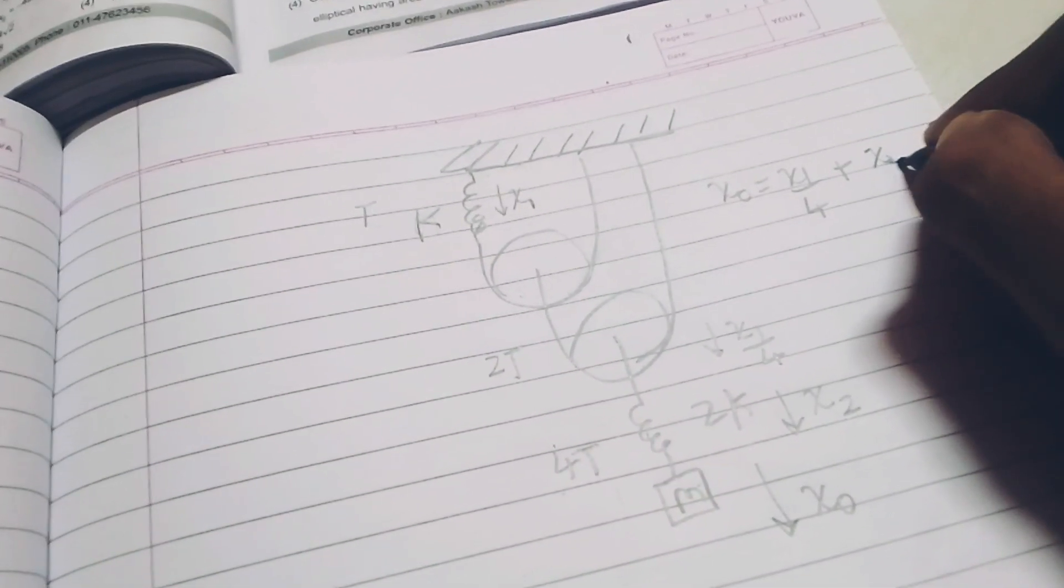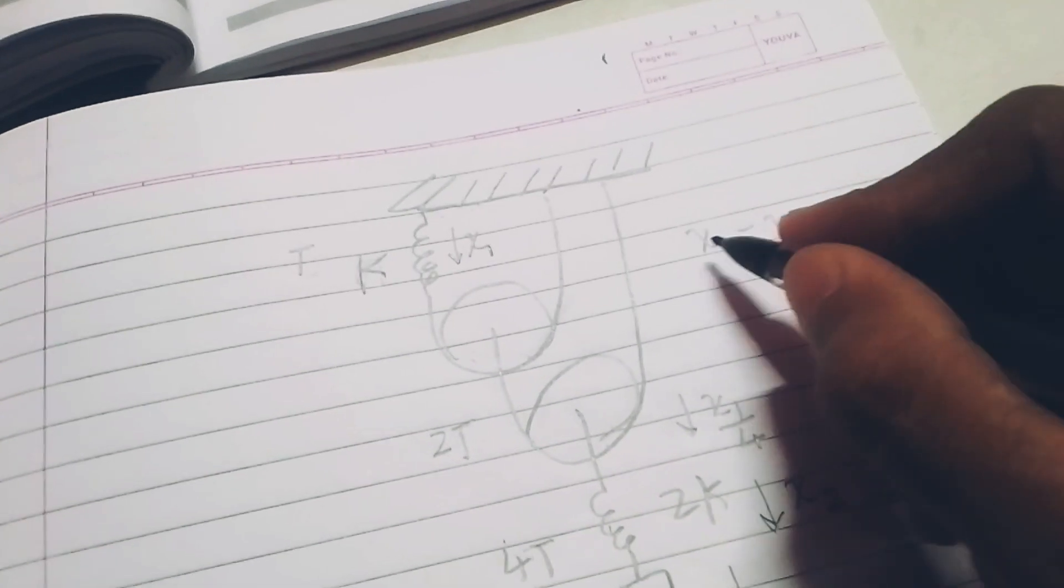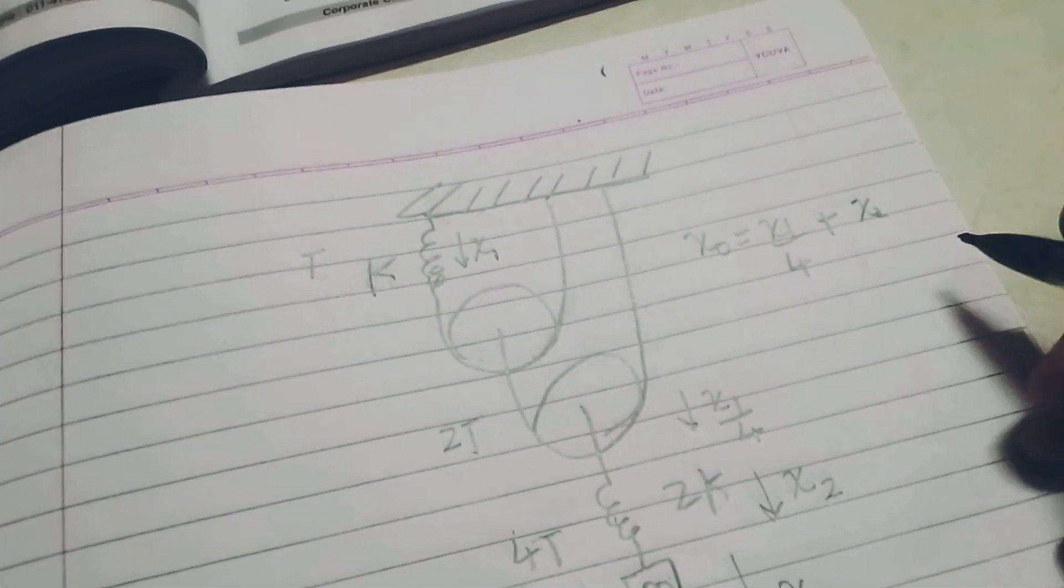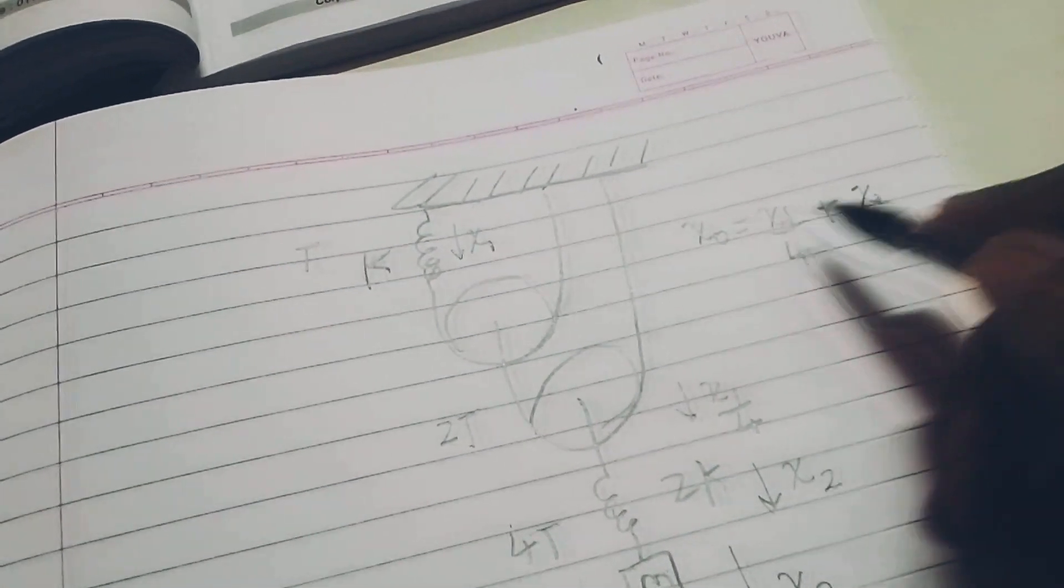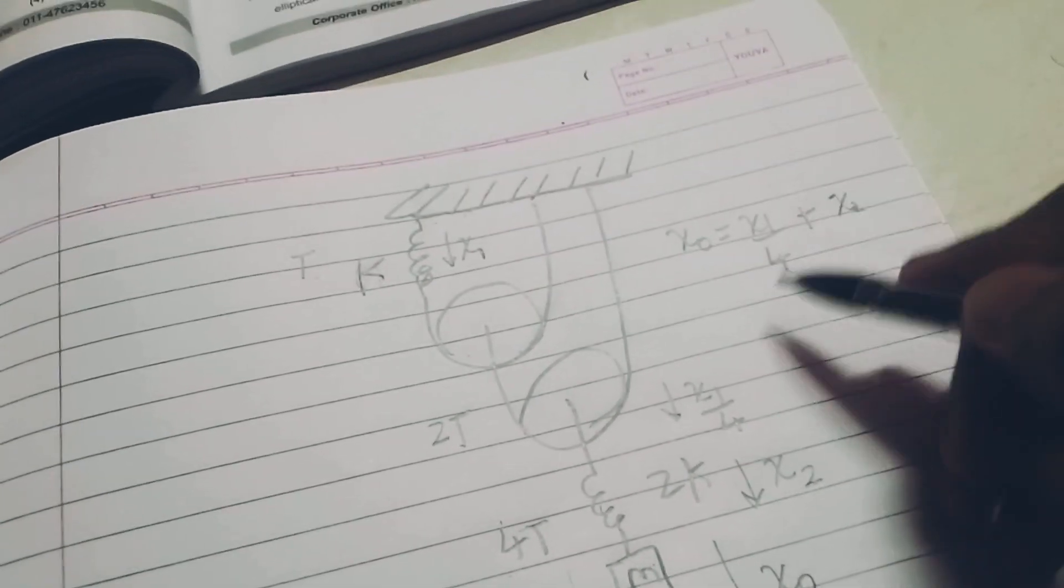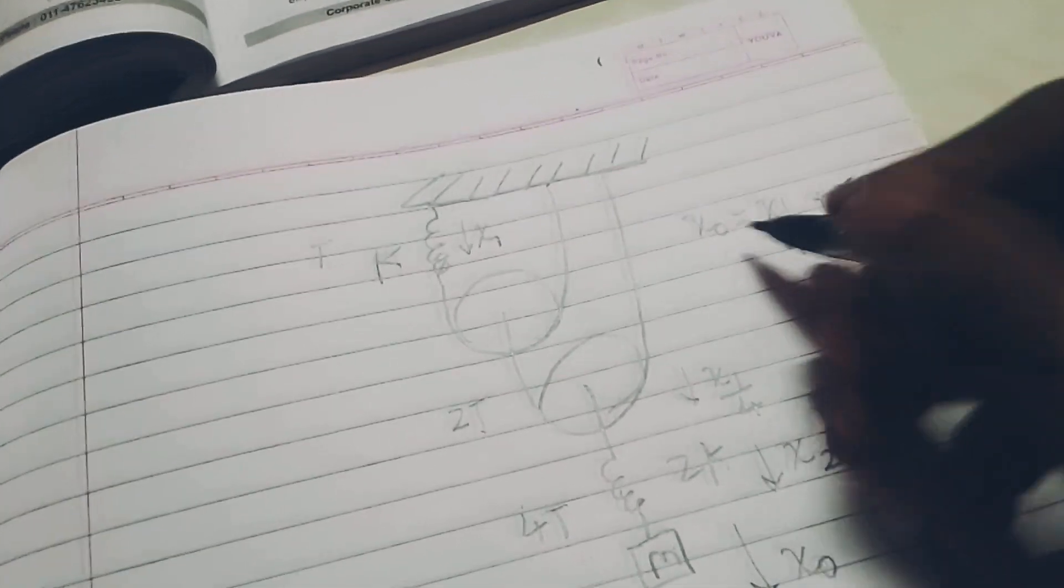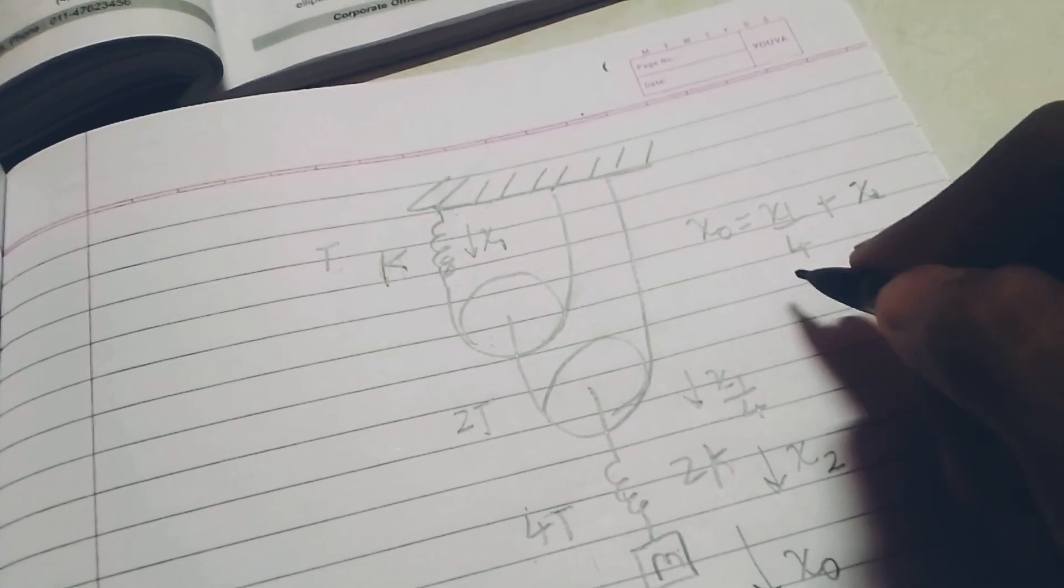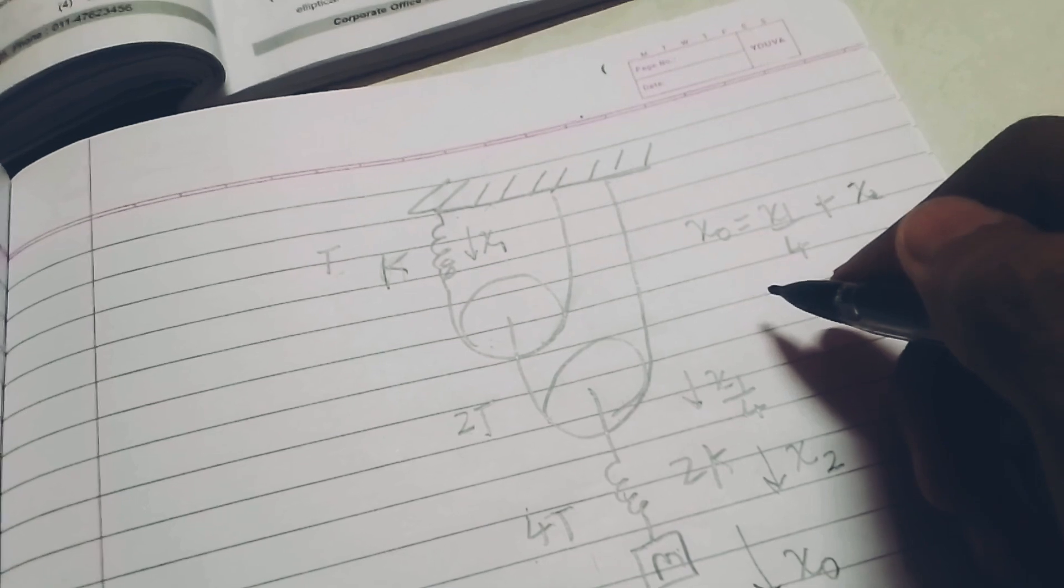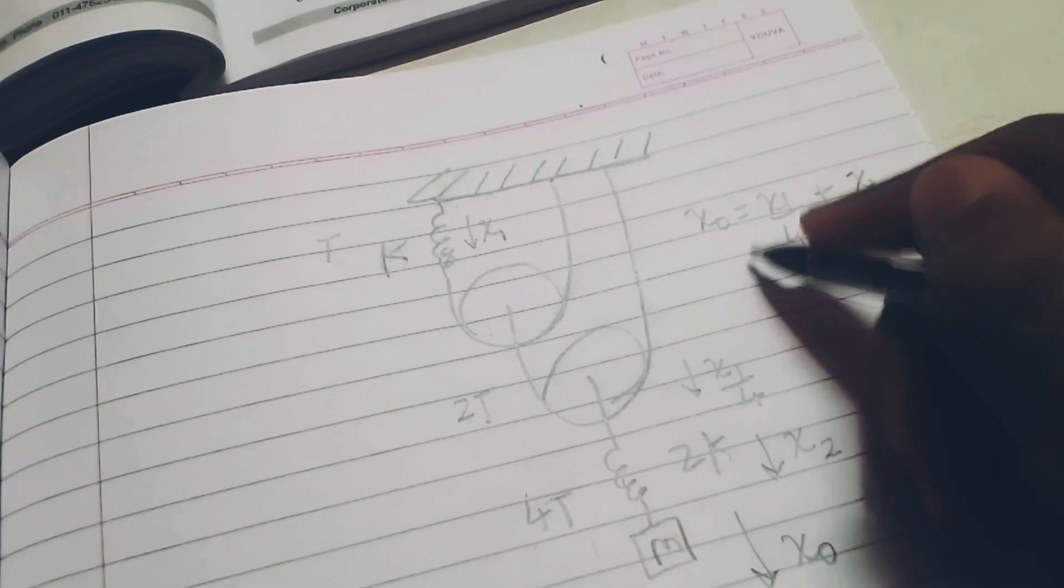So, I have x0, x1 and x2. Now, you will say that I have so many variables here, why I have created so many variables. But actually, if you see carefully then most of the variables will get cancelled and I will be getting k equivalent out of this.